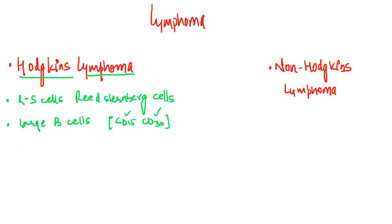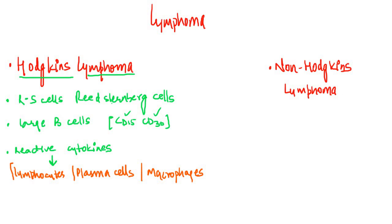These Reed-Sternberg cells secrete reactive cytokines — various chemical mediators and signals. As a result of these cytokines, they attract a large number of other cells like lymphocytes, plasma cells, and macrophages. As a result of the reactive proliferation of these lymphocytes, plasma cells, and macrophages, a mass of lymphoid tissue is formed. Please note that in Hodgkin's lymphoma, the predominant cells are lymphocytes, plasma cells, and macrophages, attracted by cytokines produced by the Reed-Sternberg cells. Therefore, the neoplastic cells are the Reed-Sternberg cells, but the bulk of the lymphoma is formed by these recruited cells. It is the Reed-Sternberg cells which characterize Hodgkin's lymphoma.